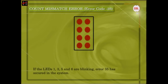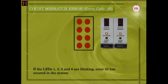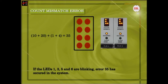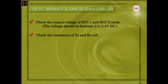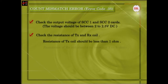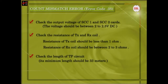Count Mismatch Error: If the LEDs 1, 3, 5, and 6 are blinking, Error 35 has occurred in the system. To rectify the error, check the output voltages of the SDC1 and SDC2 cards — the voltage should be between 2 to 2.5 volt DC. Check the resistance of the TX coil and RX coil: the TX coil resistance should be less than 1 ohm, and the RX coil resistance should be between 2 to 3 ohms. Check the length of the TP circuit — its minimum length should be 33 meters in case of amplitude type modulation only.